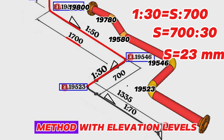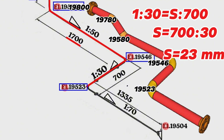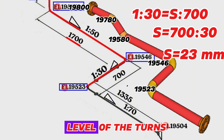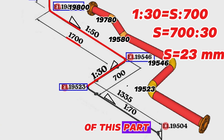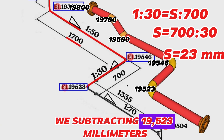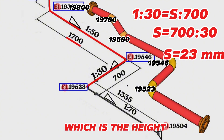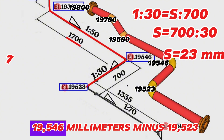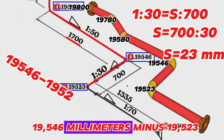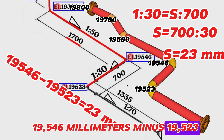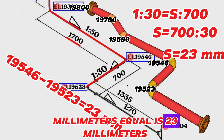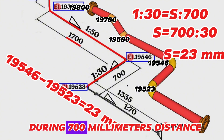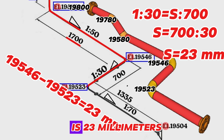Let's check this with a different method using elevation levels. From 19,546 millimeters, which is the height level of the turn-to-the-west point, we subtract 19,523 millimeters, which is the height level of the turn-to-the-south point. 19,546 minus 19,523 equals 23 millimeters. It means the slope of this part of the pipeline over 700 millimeters distance is 23 millimeters.